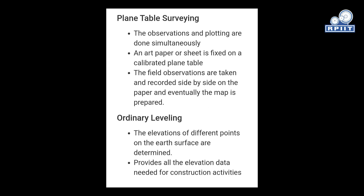Next is plane table survey. In this type of survey, the observation and plotting are done simultaneously. An art paper sheet is affixed on the calibrated plane table, and the field observations are taken and recorded side by side on the paper.